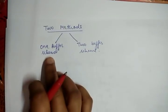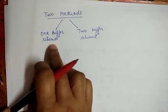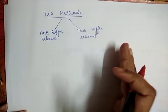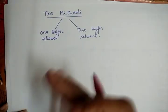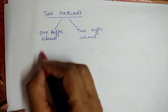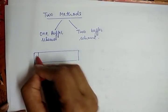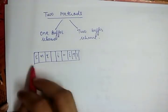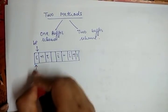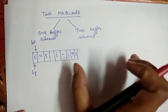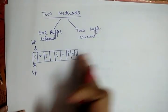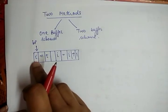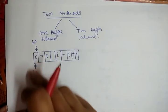In the one buffer scheme, only one buffer is used to store the input string. The problem with this scheme is that if the lexeme is very long and crosses a buffer boundary, the buffer has to be refilled to scan the rest of the lexeme. This causes overlapping or overwriting of the first part of the lexeme. For example, if the source code lexeme is very long and crosses the buffer boundary, refilling the buffer overwrites the earlier part of the lexeme.